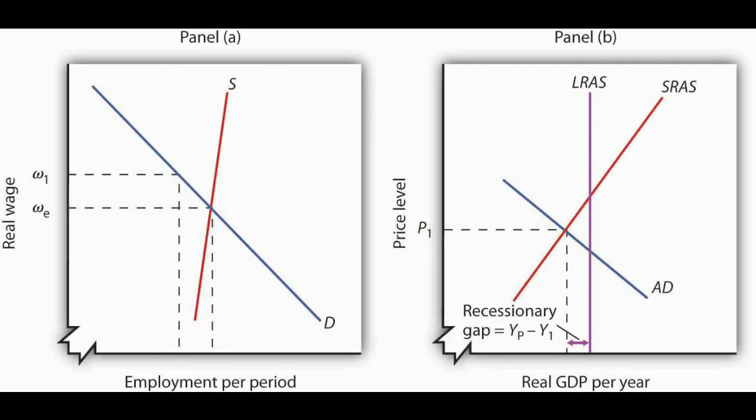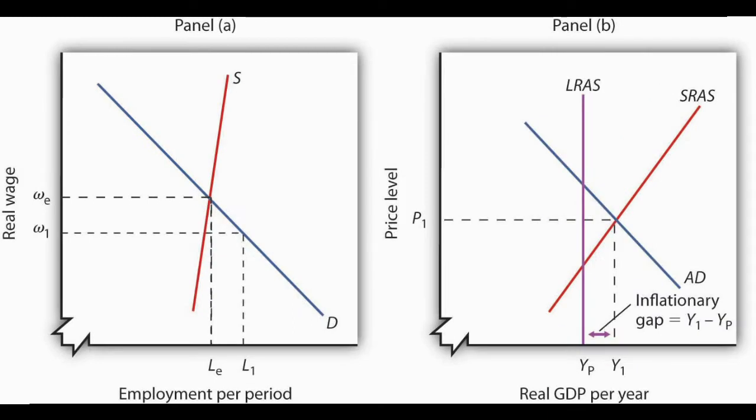Underperformance results in a recessionary gap, which is identified as real GDP in the short run below potential, or real GDP in the long run. Graphically, the recessionary gap can be identified by the AS and AD curves intersecting to the left of the LRAS curve. Overperformance results in an inflationary gap, which is identified as real GDP in the short run above potential output. Graphically, the inflationary gap is illustrated by the AS and AD curves intersecting to the right of the LRAS curve. Note that inflation isn't necessary for an inflationary gap, nor do all recessionary gaps only exist during recessions.